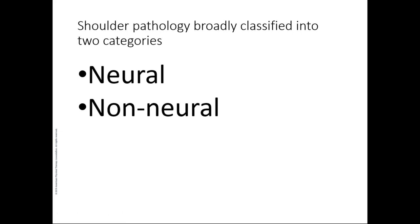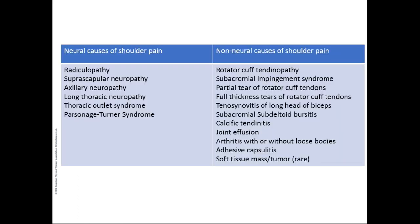We broadly classify pathology related to shoulder pain or weakness into two categories: neural and non-neural. Neural causes include radiculopathy, neuropathy of the suprascapular nerve, axillary nerve, long thoracic nerve, thoracic outlet syndrome — which is always a difficult diagnosis — and Parsonage-Turner syndrome, also known as brachial amyotrophy, neuralgic amyotrophy, or acute brachial neuritis.